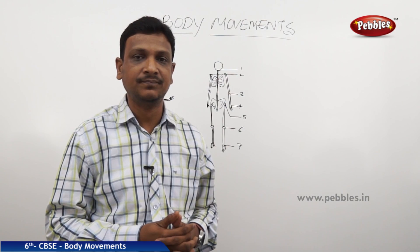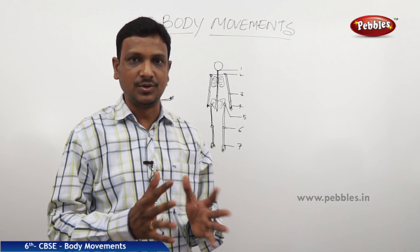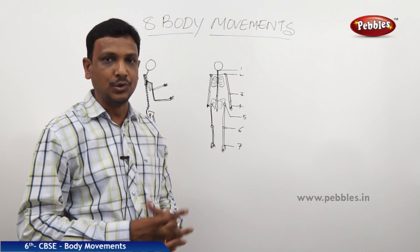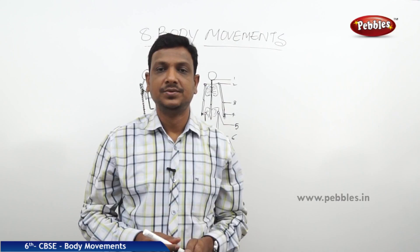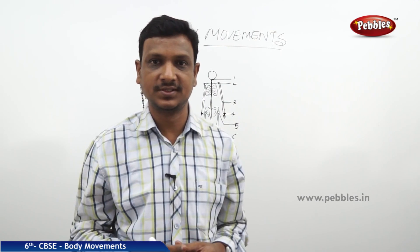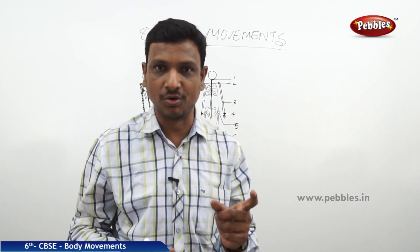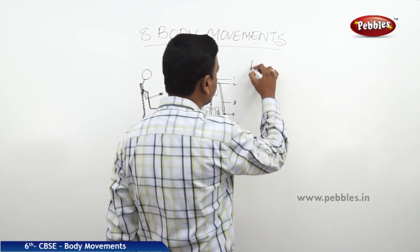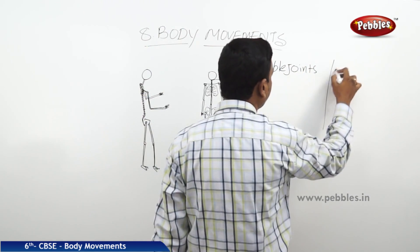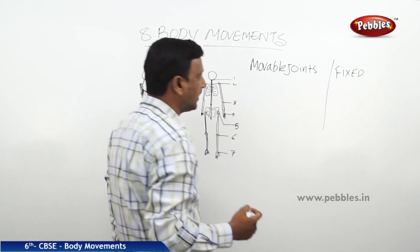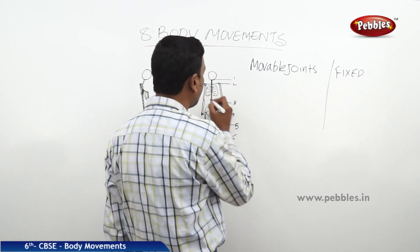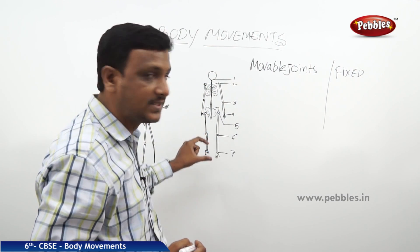Now let us label and name these joints. In our body we have two main kinds of joints: fixed joints and movable joints. Here we are talking about the movable joints. The fixed joints will be discussed separately. The numbers shown indicate the locations where the movable joints are placed in our body.